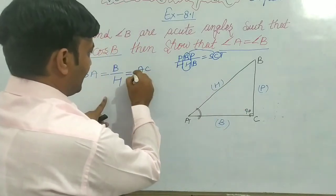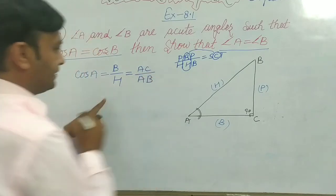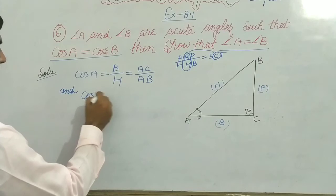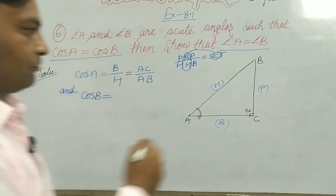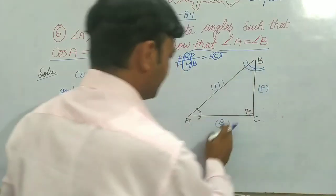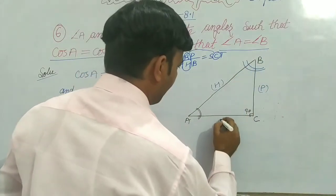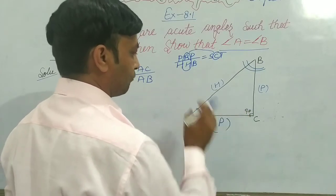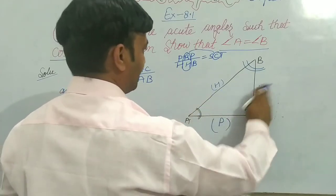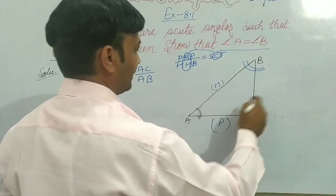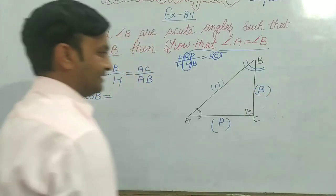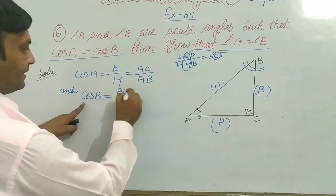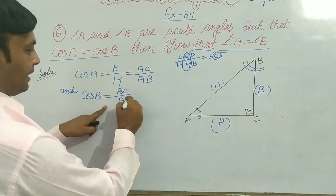For angle A, the base we have in the figure is AC, and the hypotenuse is AB. Similarly, for cos B, angle B is an acute angle. The opposite side of angle B is the perpendicular, and the hypotenuse — which always remains opposite the right angle — stays as AB. The remaining side is the base BC.